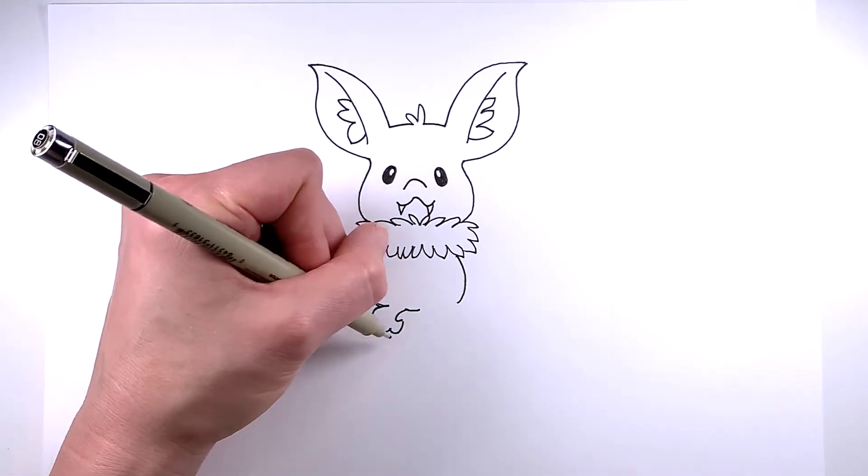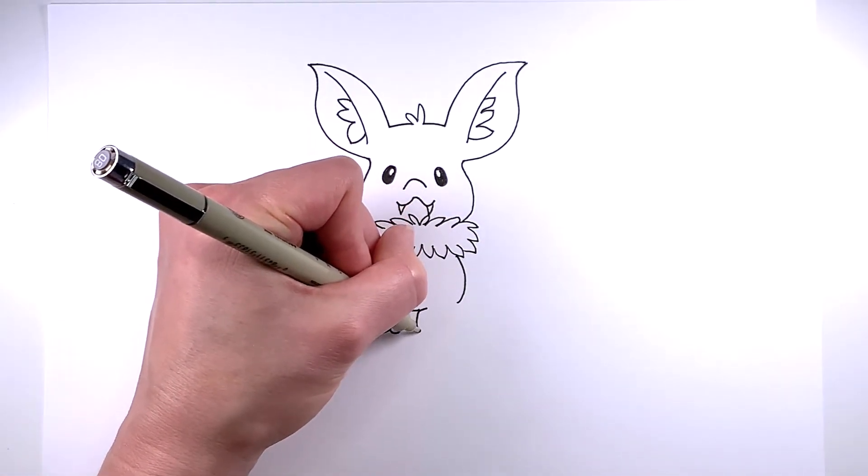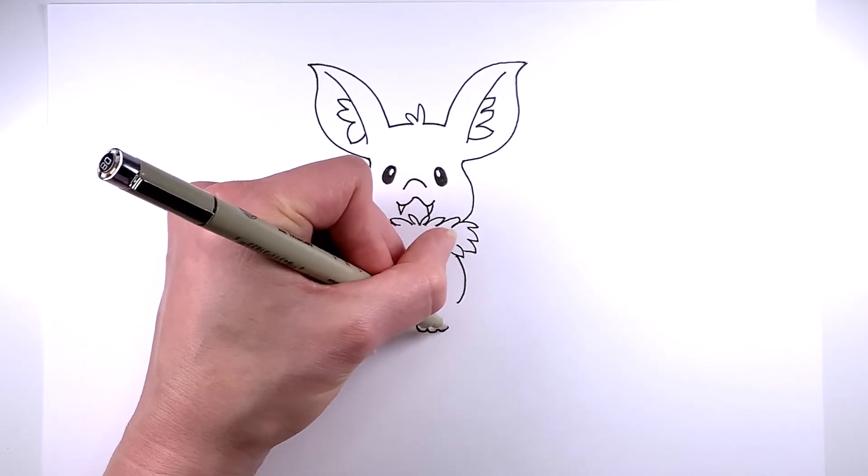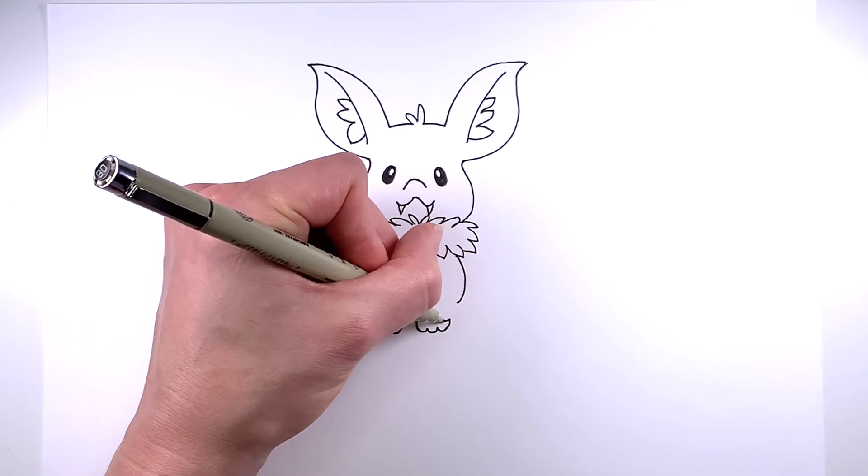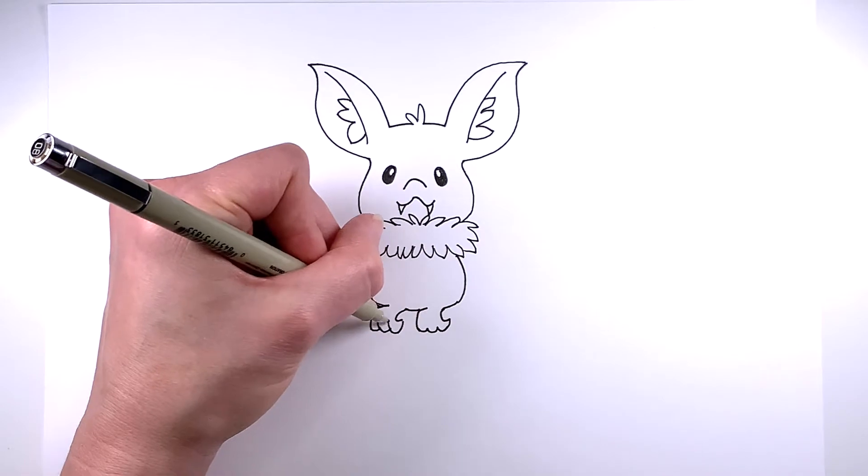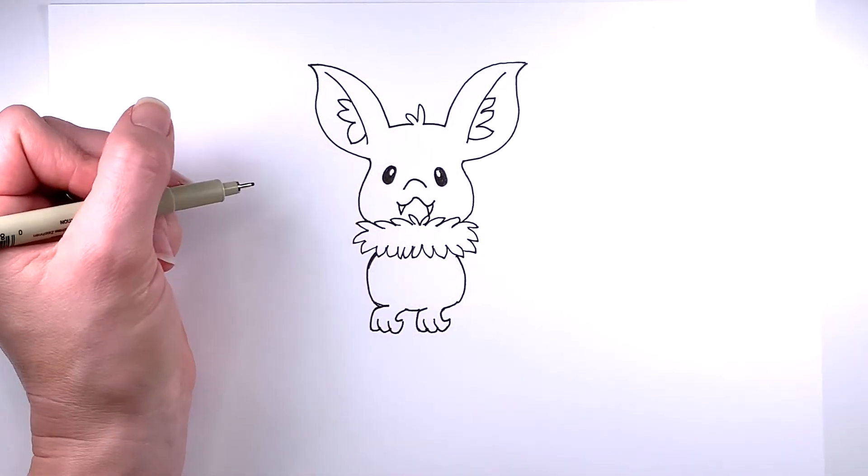And then come up toward the center of the body, make a small curve, and then repeat what you did on the other side. It should look the same, it should be identical. And then to form the toes, just make some small curves on that foot.